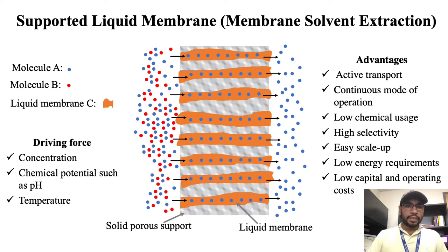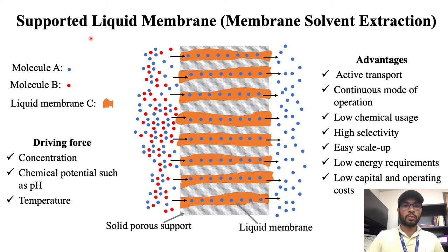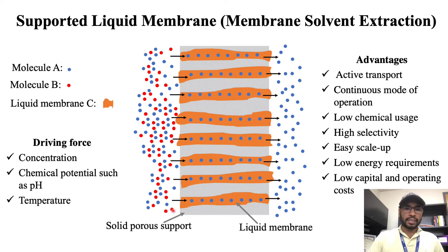In this video, I'm going to introduce you to the supported liquid membrane, which is also called the membrane solvent extraction process. Supported liquid membrane is a chemical separation process where a liquid membrane is incorporated into a porous support — let's say this is the porous support and this is the liquid membrane.